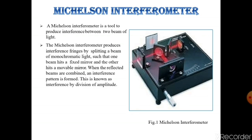The Michelson interferometer produces interference fringes by splitting a beam of monochromatic light such that one beam hits a fixed mirror and the other hits a movable mirror. When the reflected beams are combined, an interference pattern is formed.